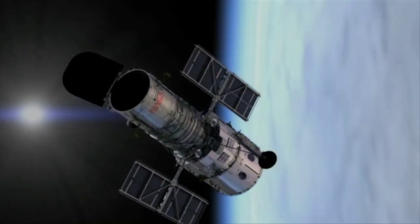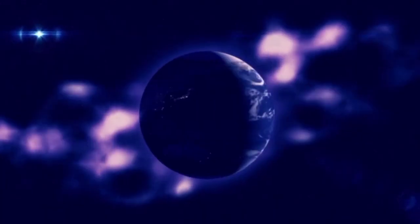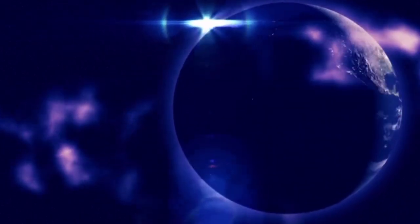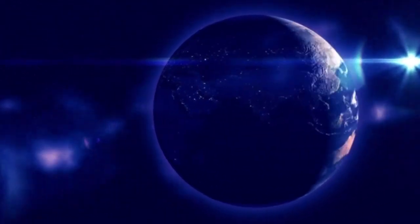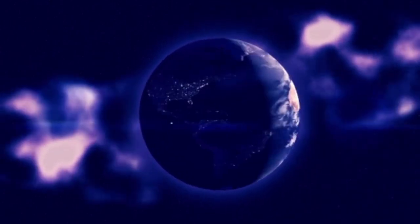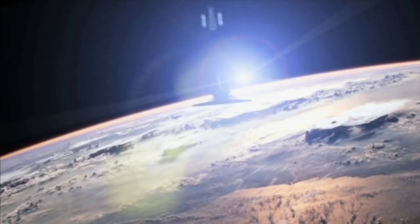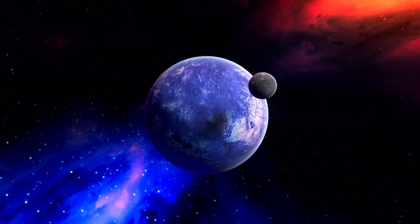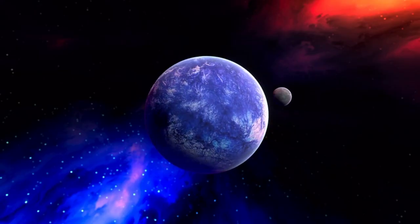This planet, no larger than twice Earth's size, emerges as a steamy water world, challenging our understanding of planetary atmospheres. The scorching temperatures on GJ9827D, akin to Venus at a blistering 800 degrees Fahrenheit, render it inhospitable for life as we know it.